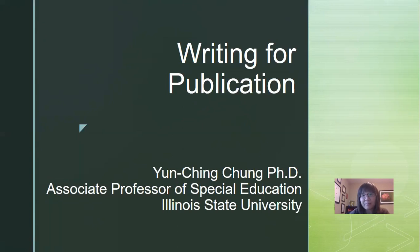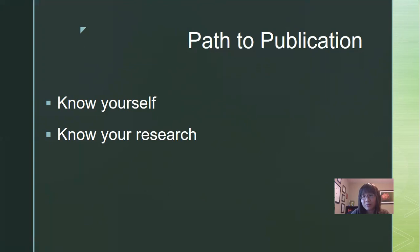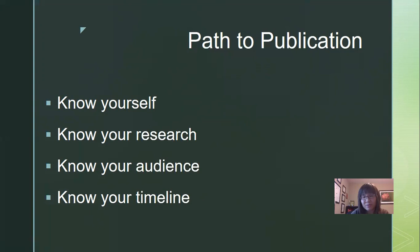When thinking about writing for publications, here are some ideas I would like to share based on my own experience. There are four key considerations that lead to the path to publication: know yourself, know your research, know your audience, and know your timeline. I'm going to spend a little bit of time talking about each of these elements and share some of my own experience.